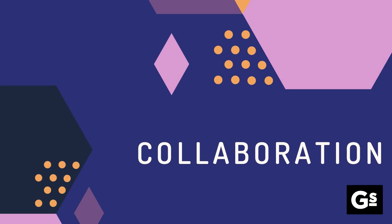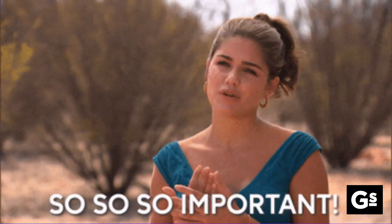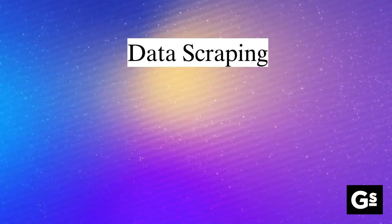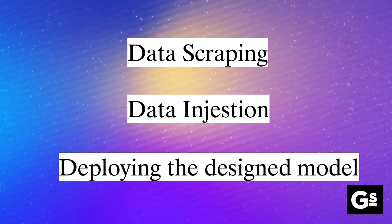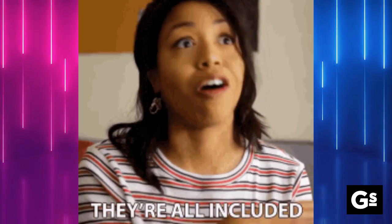Apart from these, data scientists also contribute towards building data models, deploying the models, maintaining those applications, and many more things. Now for an important topic — what are the skills needed for becoming a successful data scientist? The truth is, the skills of a data scientist are inclusive of the skills required for data analysts. A data scientist shall be well-versed with skills right from data scraping and data ingestion to finally deploying the designed model. We will discuss the skills for data scientists exclusive of those already covered for data analysts.